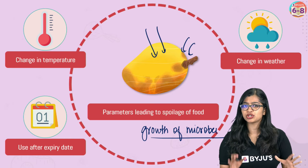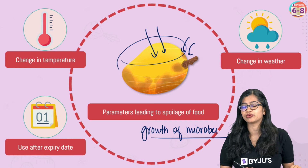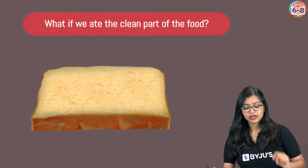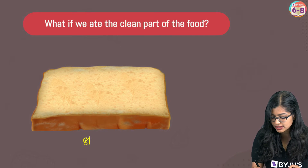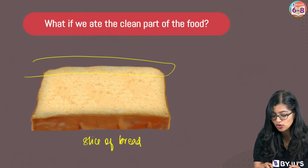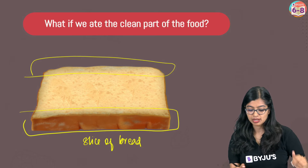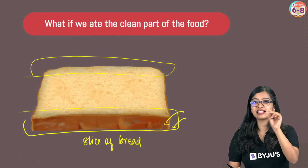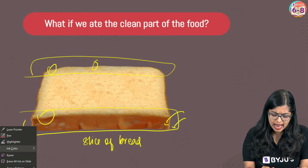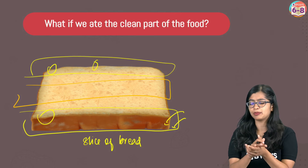Our question today is: what if we ate the clean looking part — not the spoiled part, but the clean looking part of food? In order to understand this, we will take an example of bread. Here as you can see on the screen, we have a slice of bread. You can see that the edges do not look clean — rather they look spoiled — simply because we see a slight change in color, with some grayish and greenish patches all over. But in the center, if you notice, it looks very clean and we don't see any change in color there.